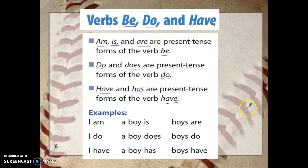Some examples. I am, a boy is, boys are — those are be verbs. I do, a boy does, boys do — those are do verbs. I have, a boy has, boys have — those are all have verbs.